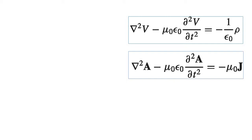So the two resulting equations are: del-squared V minus mu-zero epsilon-zero partial-squared V by partial t-squared equals minus rho by epsilon-zero, and del-squared A minus mu-zero epsilon-zero partial-squared A by partial t-squared equals minus mu-zero J.